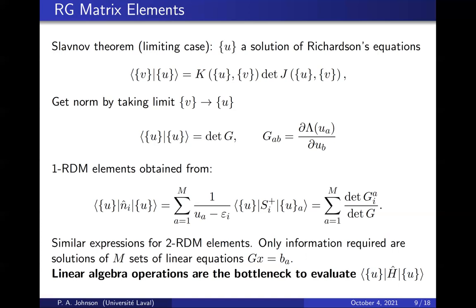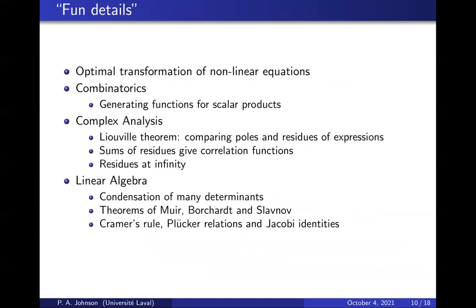With that same solution, you get all the 2RDM elements in terms of the same primitives. So it is very easy and straightforward to compute the one and two RDM elements by solving a set of linear equations. Plus, the bottleneck to evaluate the energy with this wave function is linear algebra operations. That is generally a good sign. So there's a lot of details in how you arrive at these results that we will not talk about today. The work we generally do in our group is the hard work on paper so that the final results are easy for the computer.